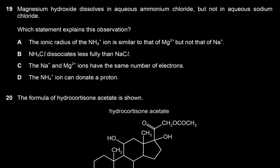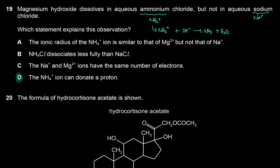Magnesium hydroxide dissolves in aqueous ammonium chloride but not in aqueous sodium chloride. The difference is the ammonium ion. Ammonium ions are acidic — they can react with hydroxide ions as proton donors to form NH₃ and H₂O. So there's an acid-base reaction between ammonium chloride and magnesium hydroxide that dissolves it, which doesn't happen with sodium chloride. The answer is D.